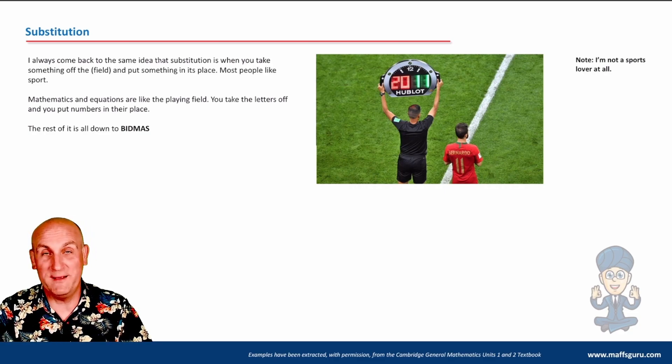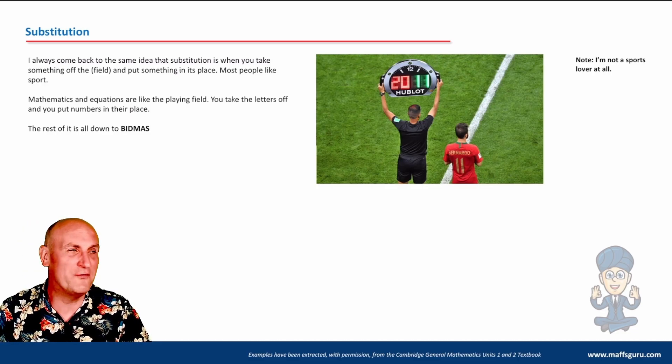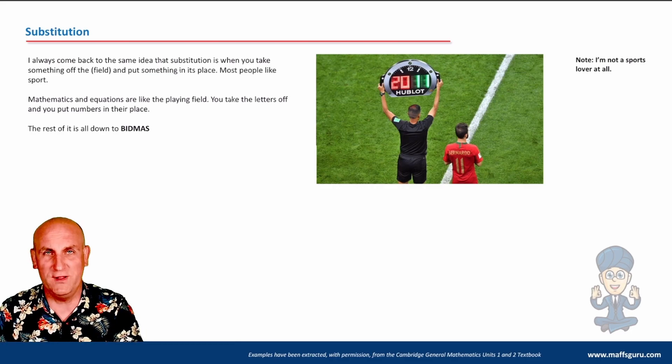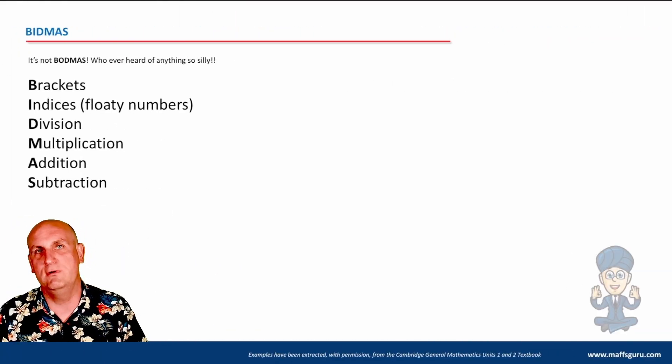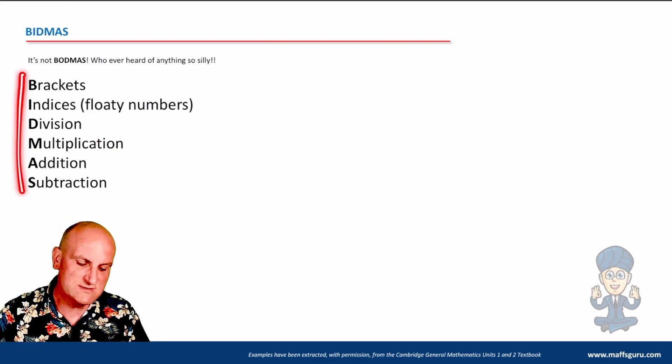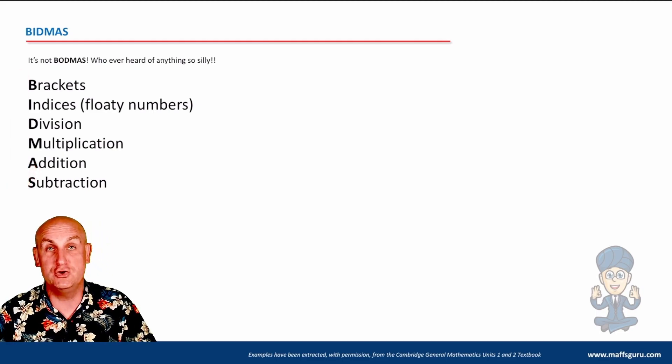What becomes important once you've substituted is actually then how to solve it. And we use something called BIDMAS. If you say BODMAS, there is an issue. I have no idea what the O stands for. I is for indices. It's for floaty numbers. BIDMAS is really, really important because it's the order that gives us an indication of the order that we should do maths.